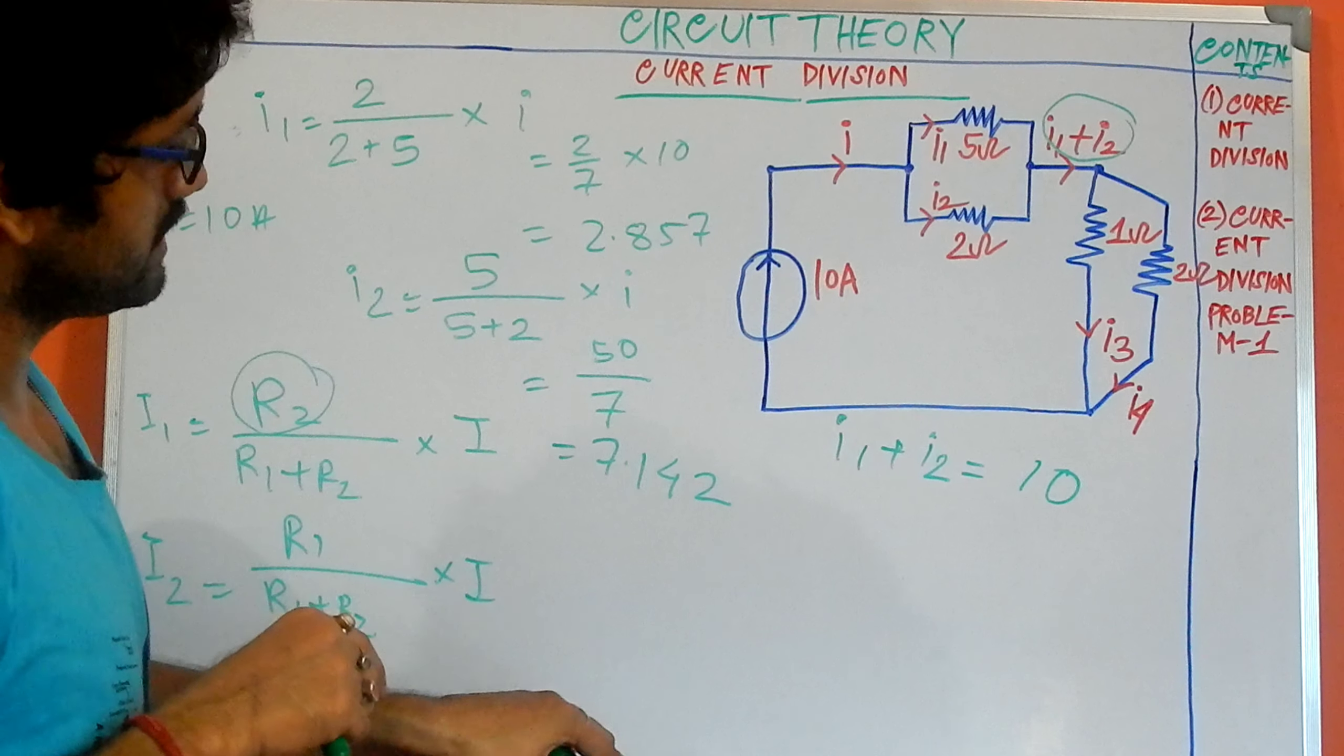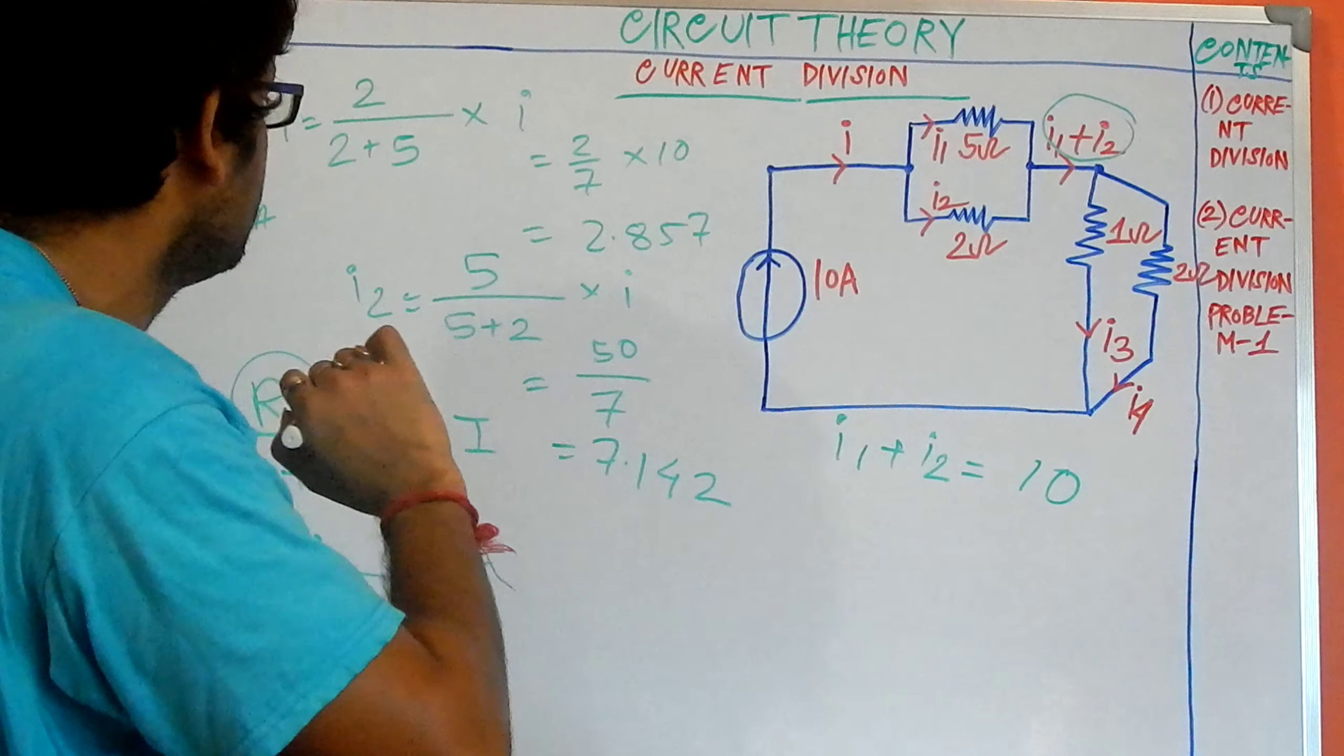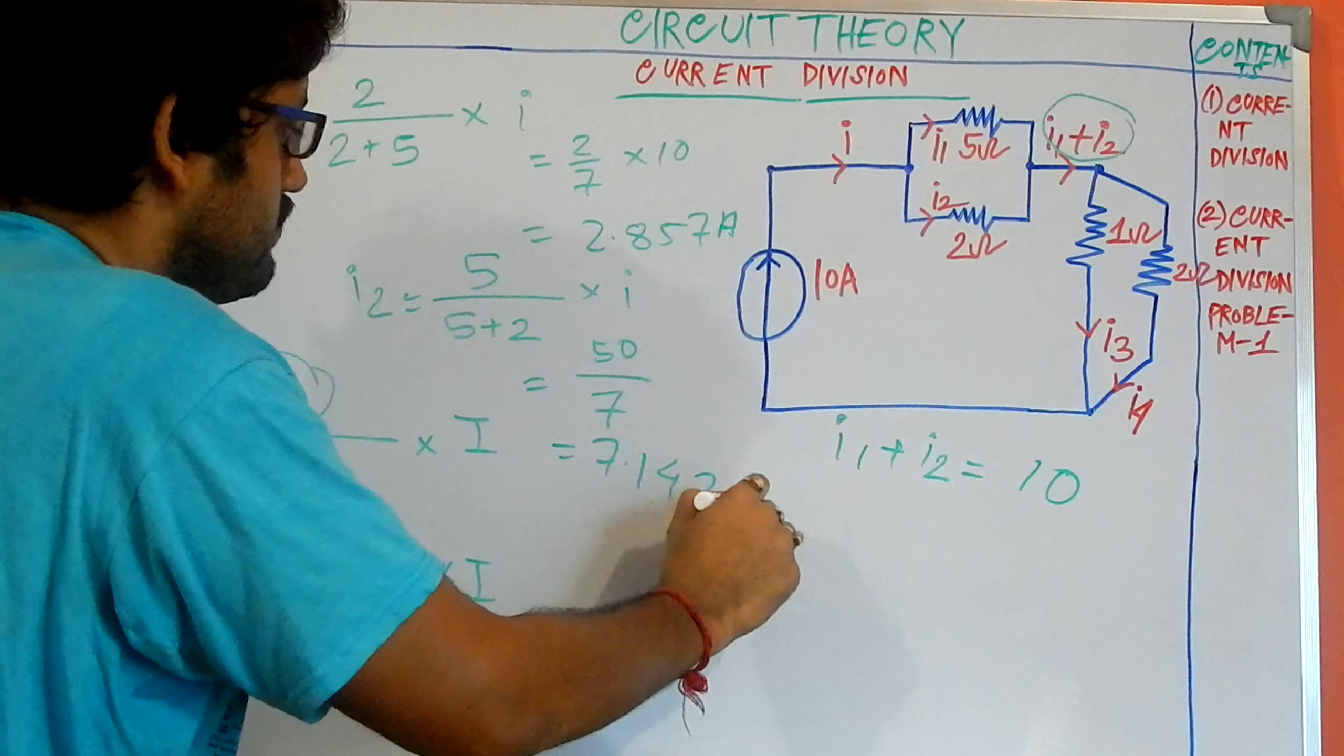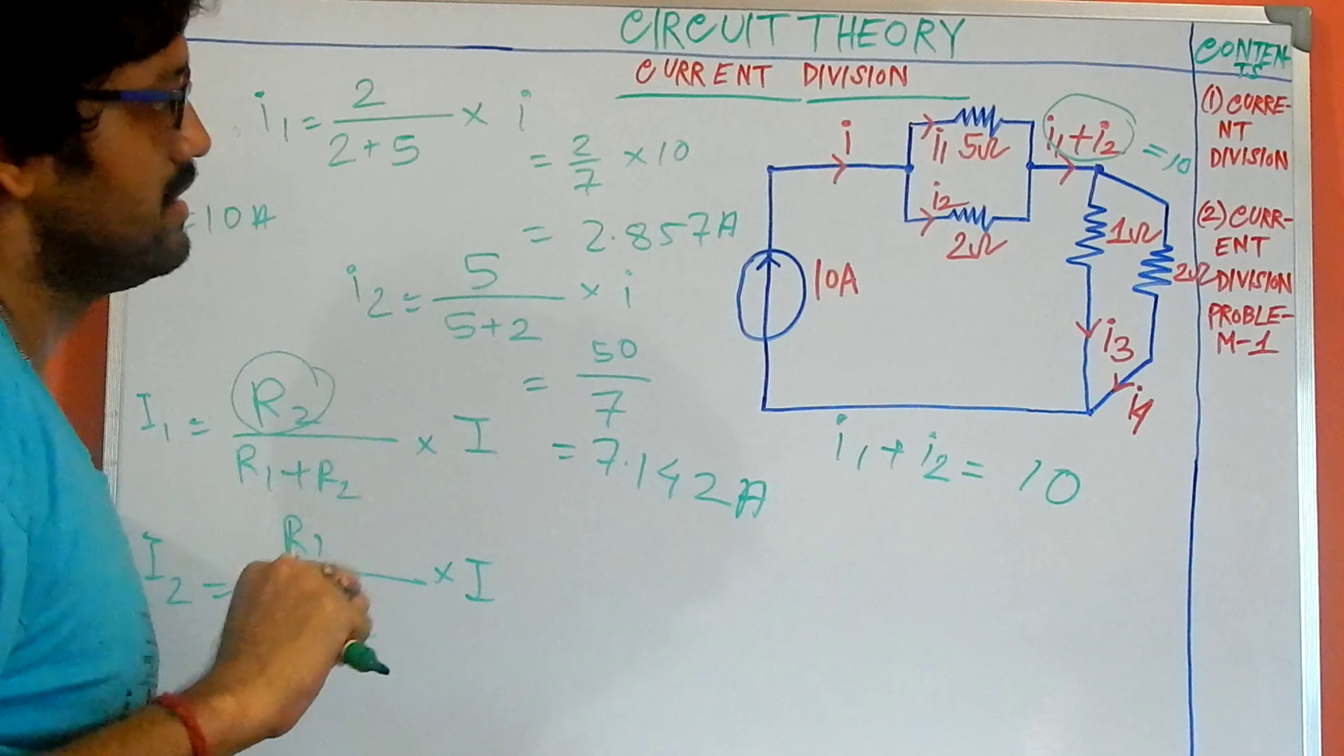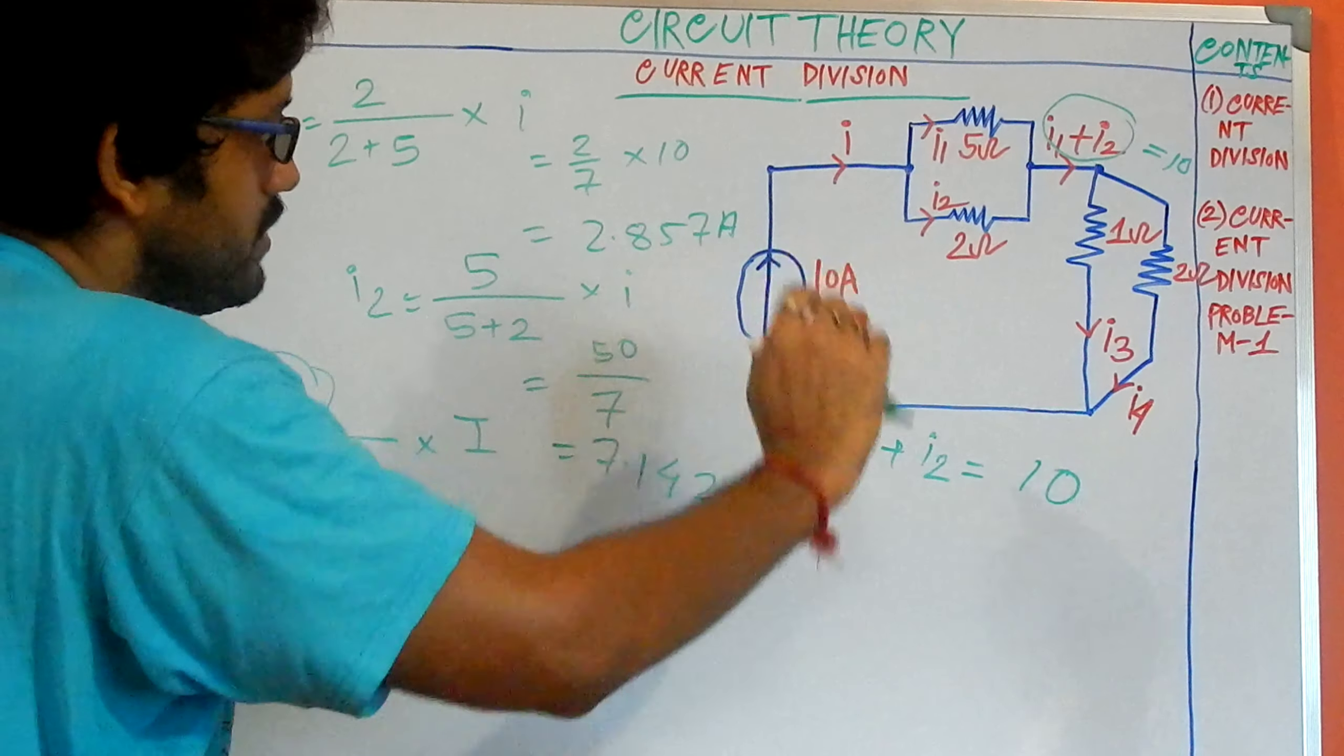So the 10 ampere current is being divided between these two resistances. The value of I1 is 2.857 amps and I2 is 7.142 amps. On the right-hand side, the current is also 10. Here another type of distribution has happened.